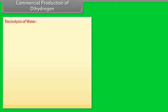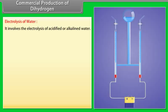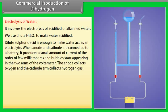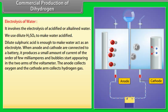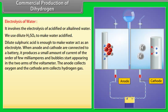Commercial production of dihydrogen. Electrolysis of water. It involves the electrolysis of acidified or alkalined water. We use dilute H2SO4 to make water acidified. Dilute sulphuric acid is enough to make water act as an electrolyte. When anode and cathode are connected to a battery, it produces a small amount of current of the order of few milliampere and bubbles start appearing in the two arms of the voltmeter.